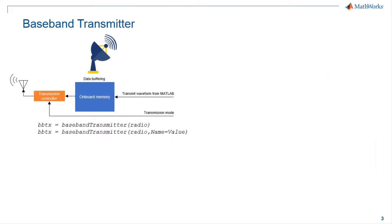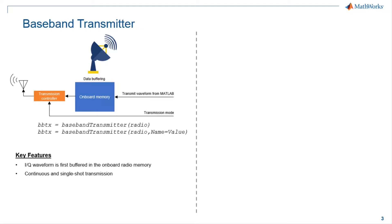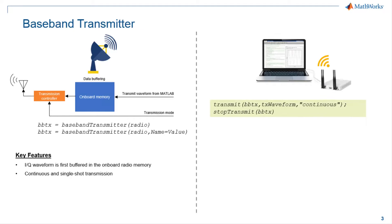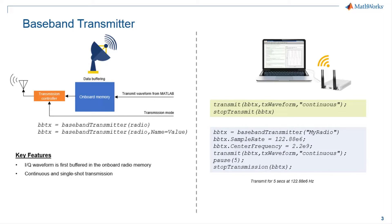This diagram shows the baseband transmitter provided by Wireless TestBench. You can easily convert a supported USRP radio into a baseband transmitter from MATLAB and configure it to transmit baseband samples to the air. The transmitter uses onboard RAM to achieve high-speed transmission. You can configure continuous or single-shot transmission. The baseband transmitter provides transmit and stop transmit functions. The code shows how to transmit at a specified sample rate for 5 seconds and then stop.